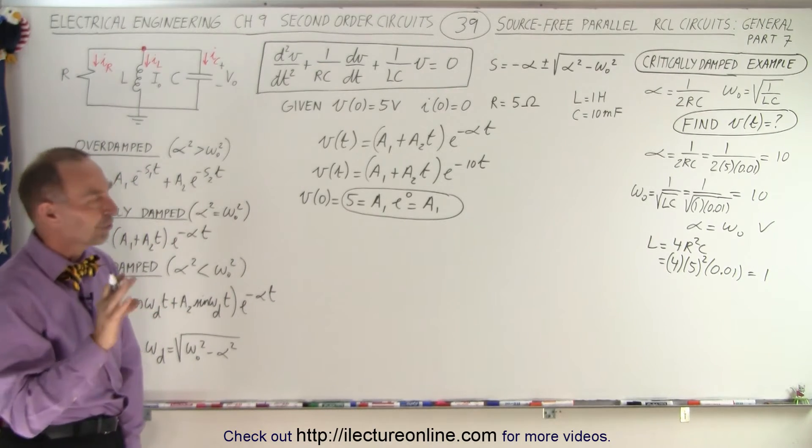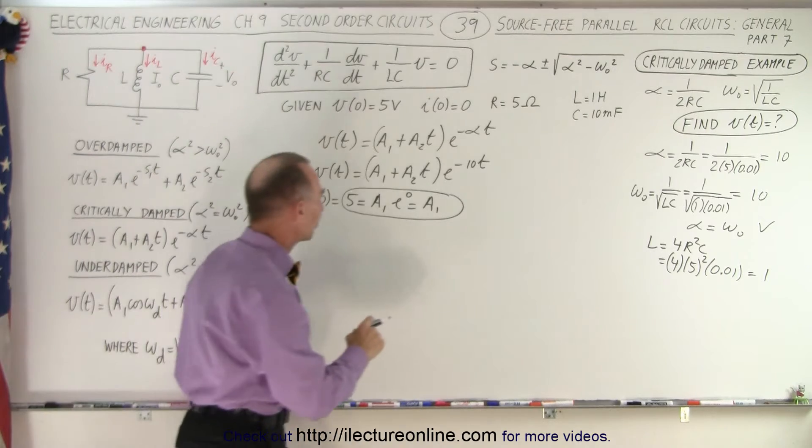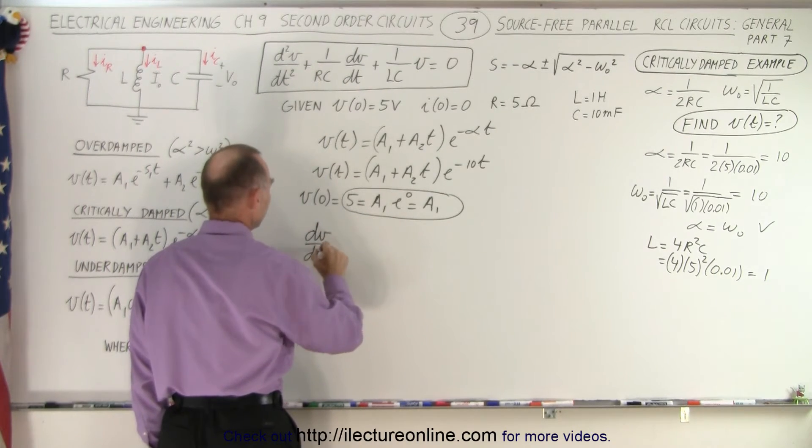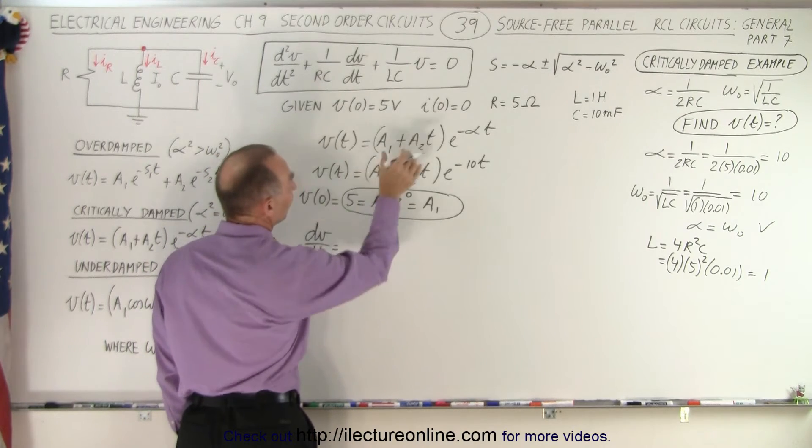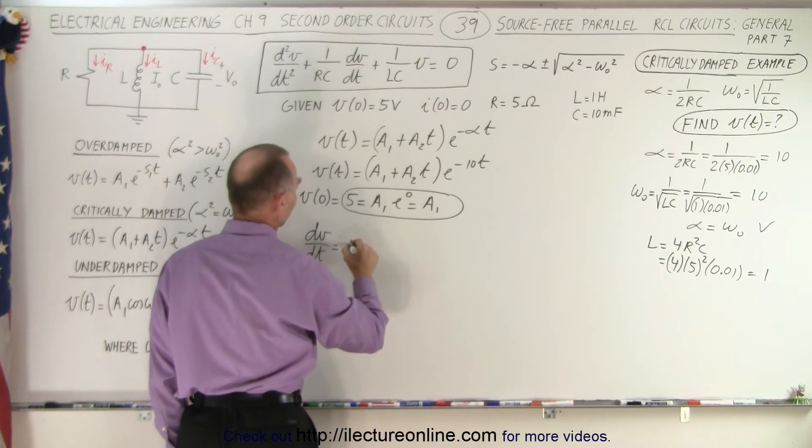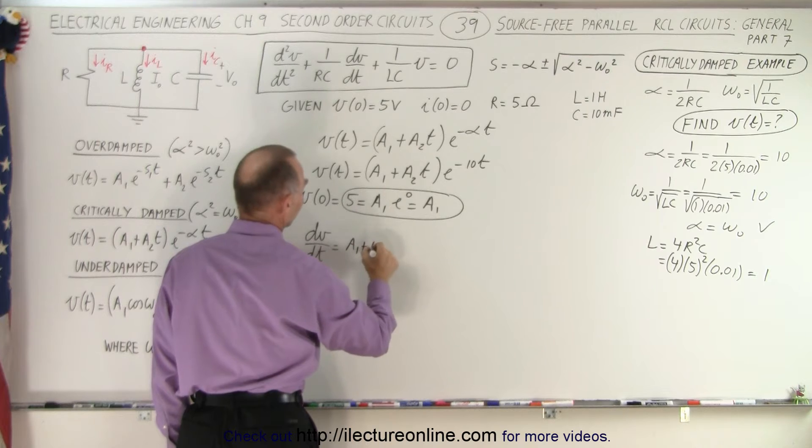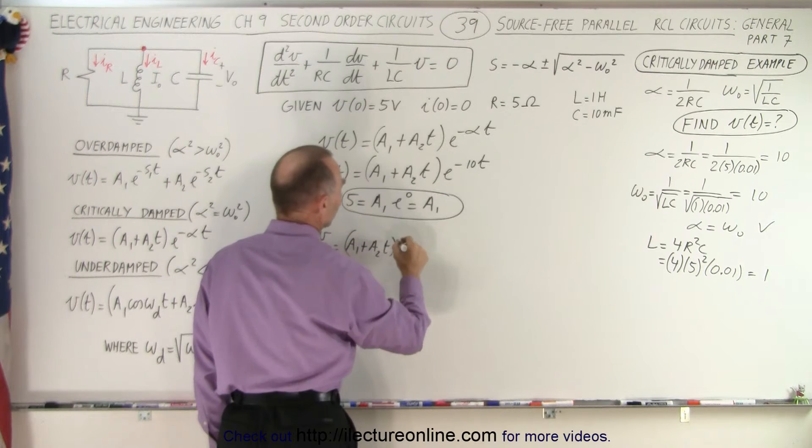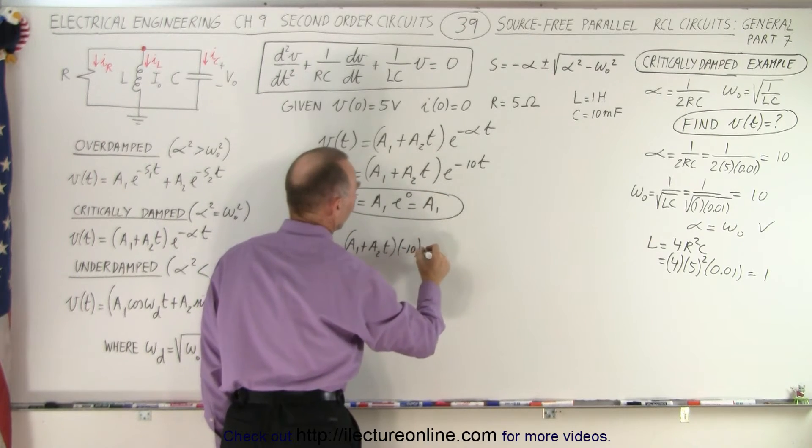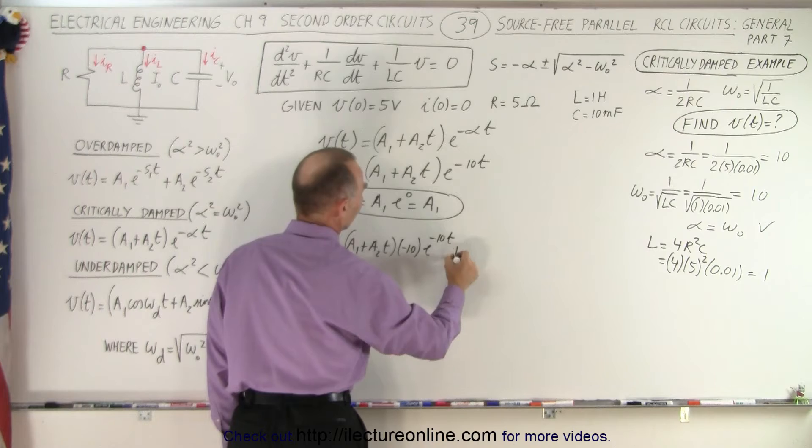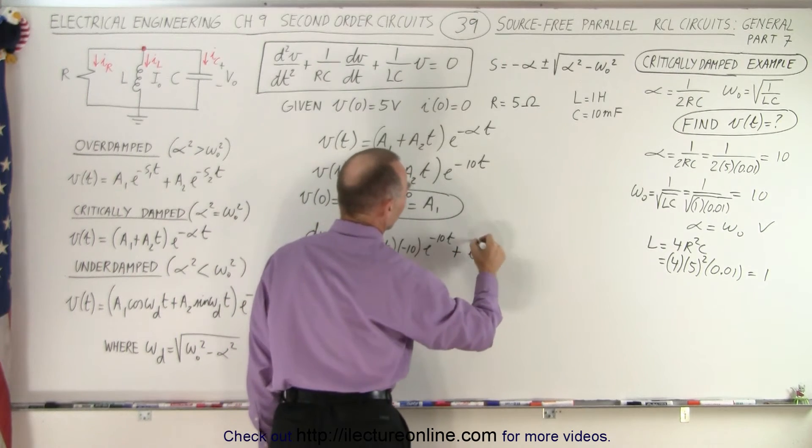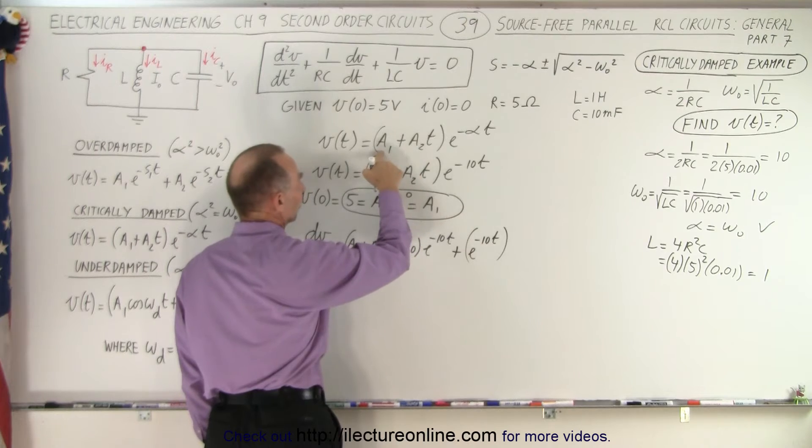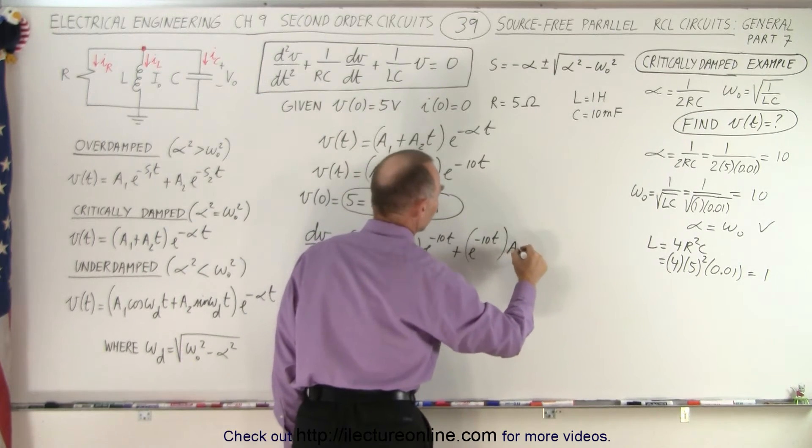Now we need to find the value for A2. For that we need to take the derivative of that function. So dV dt is equal to, we have a product so it's the first A1 plus A2 times T times the derivative of the second which will be minus 10 times E to the minus 10T plus the second E to the minus 10T times the derivative of the first, that's a constant that goes to 0 so it'll simply be times A2.